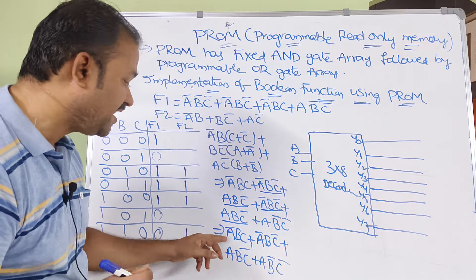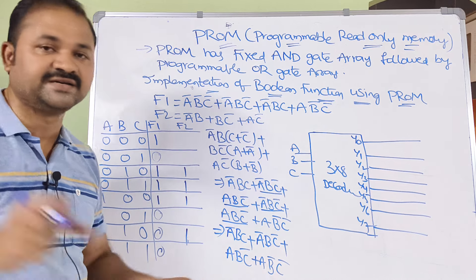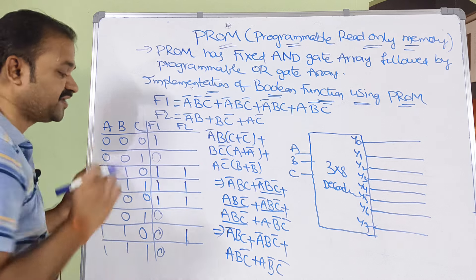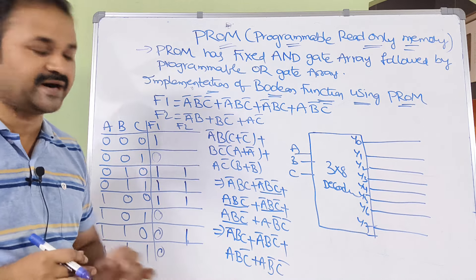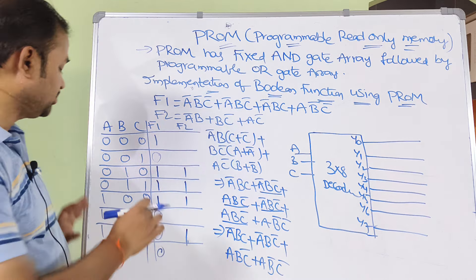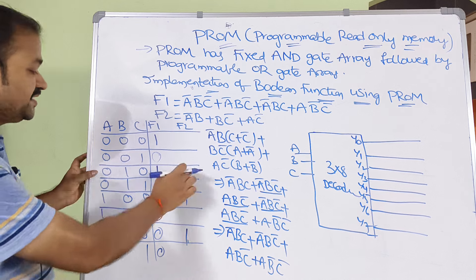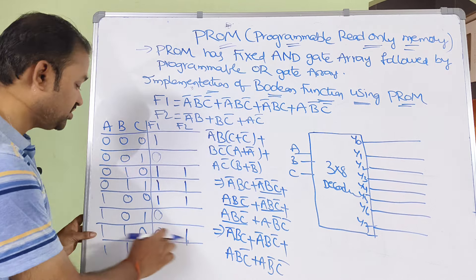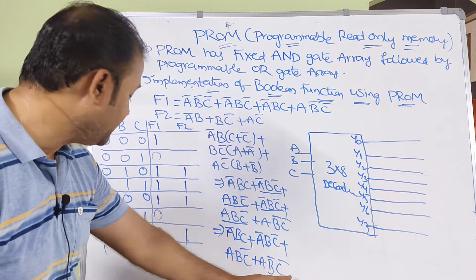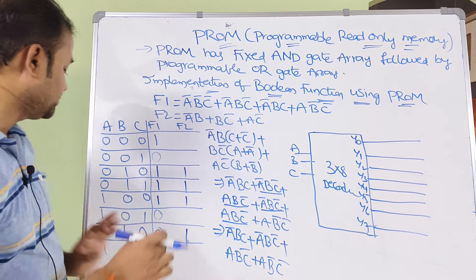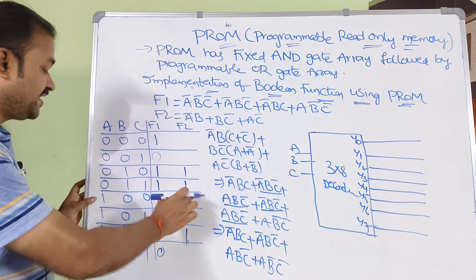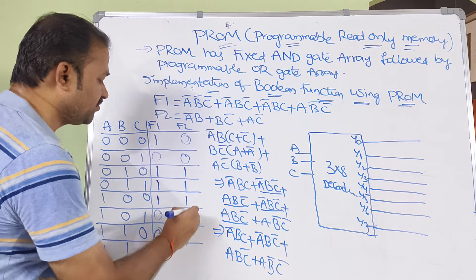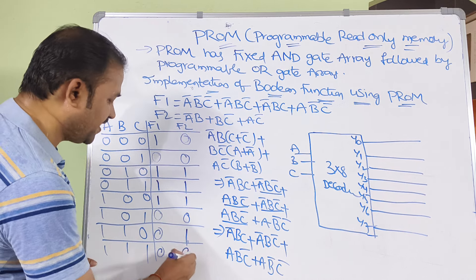Now mapping these to decimal: A bar B C means 0,1,1 which is minterm 3, so F2=1. A bar B C bar means 0,1,0 which is minterm 2, so F2=1. A B C bar means 1,1,0 which is minterm 6, so F2=1. A B bar C bar means 1,0,0 which is minterm 4, so F2=1. The remaining values of F2 are 0.